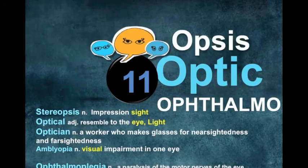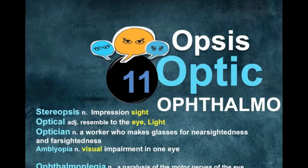Number eleven has three roots: opsis, optic, and ophthalmo, all referring to visual, sight, and eye. Stereopsis is the stereo impression of sight. Optical means resembling the eye and light. Optician is a worker who makes glasses for nearsightedness and farsightedness. Amblyopia is a visual impairment in one eye. Ophthalmoplegia is a medical term meaning paralysis of the motor nerve of the eye.